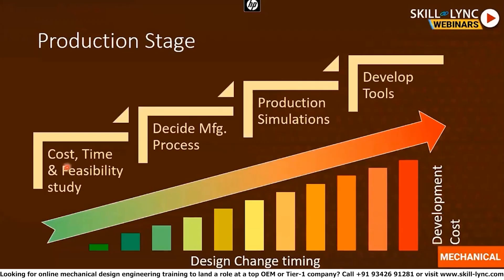Based on this cost, time, and feasibility study, the manufacturing process of each part will be decided and production simulations will be made. Similar to testing, production simulations are now being conducted both physically and using FEA. Then the actual tools for producing the part are developed. After this production stage, the vehicle will be rolled out for sales.